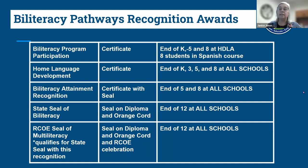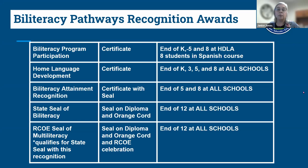This last slide is a summary of all the pathways: Program Participation earns a certificate; Home Language Development earns a certificate; Bi-Literacy Attainment Recognition earns a certificate with a seal from the state; and the State Seal of Bi-Literacy actually goes on the diploma with an orange cord, honored at senior honors night. If a student in TK or kindergarten starts understanding the importance of home language development, or participates in a language program in middle school, chances are they will continue to develop that other language and be biliterate by graduation.